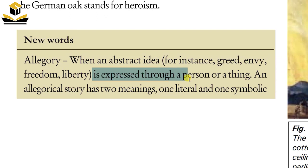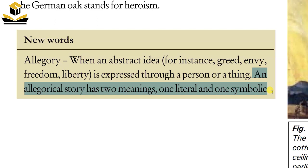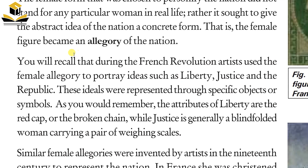When all these abstract ideas are expressed through a person or thing — this is greed, this is freedom, this is liberty — it is called allegory. An allegory has two meanings: one literal and one symbolic. For example, a sword has a literal meaning, but its symbolic meaning is that you have to fight — readiness for battle.